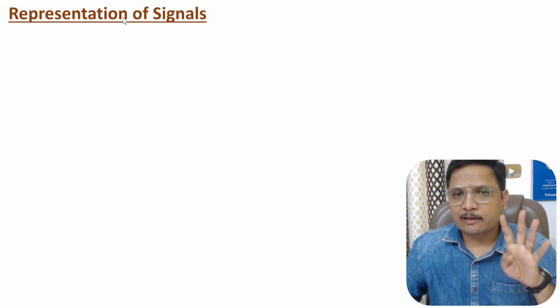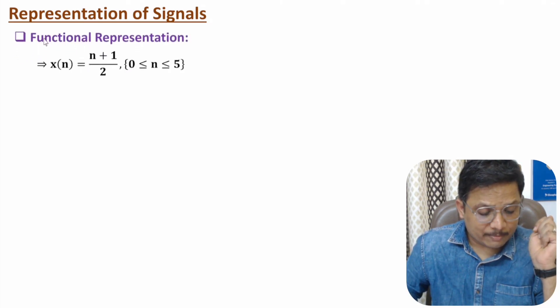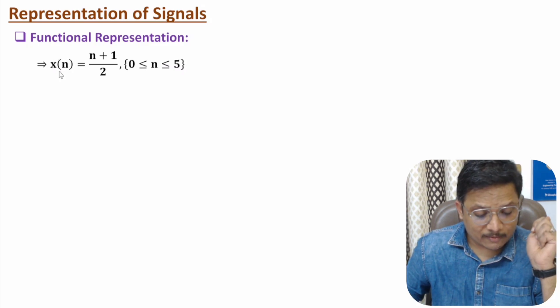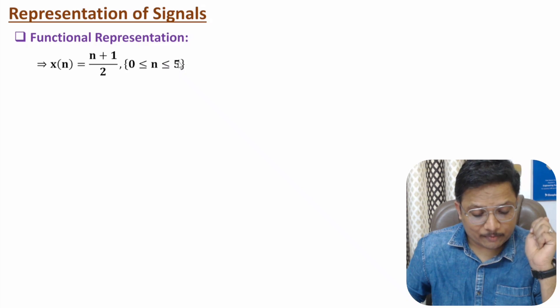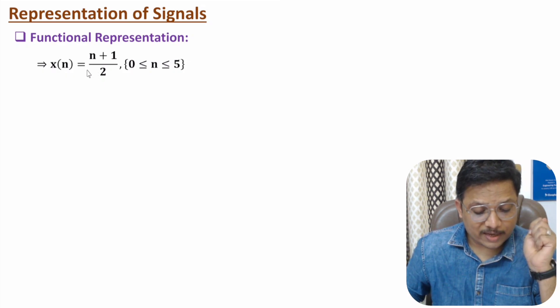Now I will discuss the representation of signals. In general, there are four ways by which we can represent a signal. The first way is representation by function. For example, I have considered the function x(n) = (n + 1) / 2, where n starts from 0 and goes up to 5. At n = 0, the value is 0.5; at n = 1, the value is 1; at n = 2, it is 1.5. By functional representation, we can represent a signal.